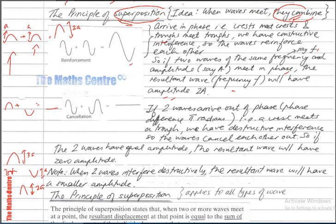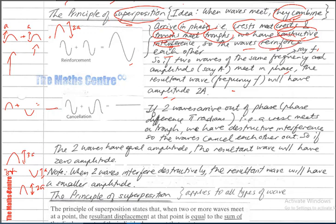There are two main ideas: constructive interference and destructive interference. In the first case, two waves arrive in phase — meaning the crest meets the crest and the trough meets the trough. When that happens, we have constructive interference, and the waves reinforce each other. The key words here are: in phase, constructive, and reinforce.